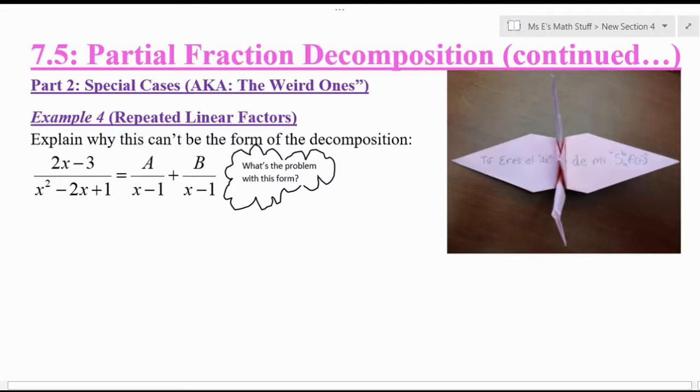Section 7.5, Part 2, is about special cases of partial fraction decomposition, also known as the weird ones.